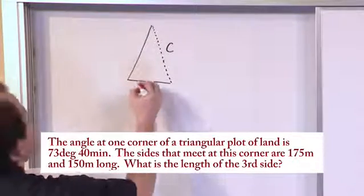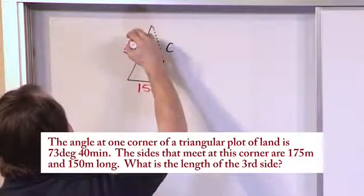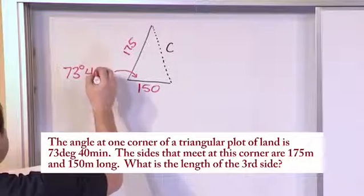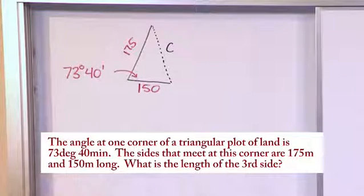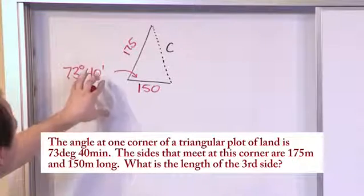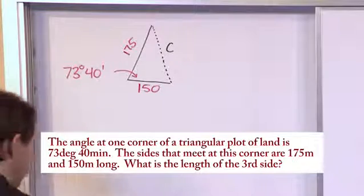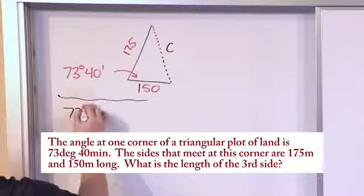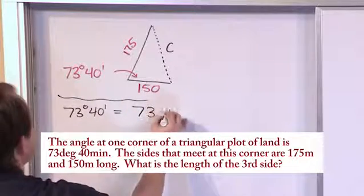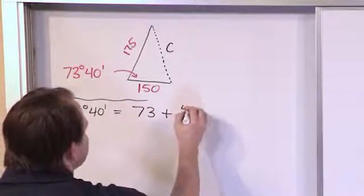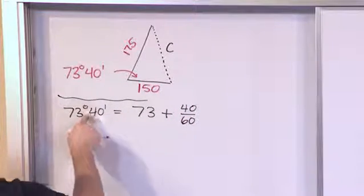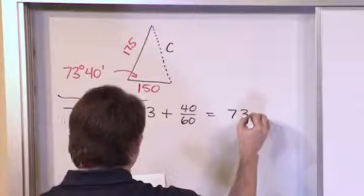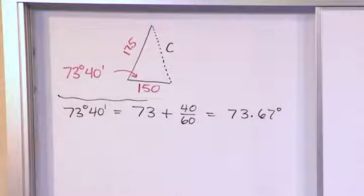One side is 150 meters and the other is 175 meters. The angle is a little unusual because it's given as 73 degrees 40 minutes of arc. When you see minutes of arc, it's giving you a fraction of a degree — there are 60 minutes of arc in every degree. So before we do anything else, we need to convert this angle to a decimal. 73 degrees 40 minutes equals 73 plus 40 over 60, which gives us 73.67 degrees.